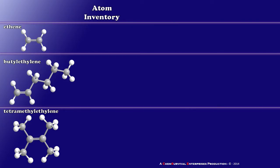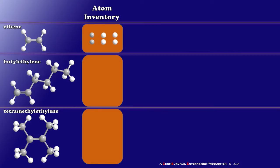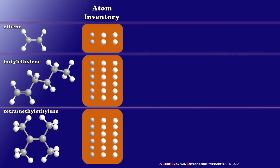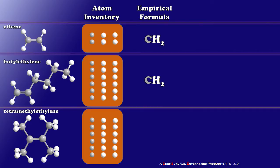Let's take an inventory of all the atoms in each molecule. Ethene has two carbons and four hydrogens. Butylethylene has six carbons and twelve hydrogens. Tetramethylethylene, though clearly different from butylethylene, also has six carbons and twelve hydrogens. The empirical formula uses the simplest whole number ratio, so ethene is CH2, butylethylene is also CH2, and tetramethylethylene is also CH2. We can already see the limitations — many different compounds can have exactly the same empirical formula and be indistinguishable by this method.